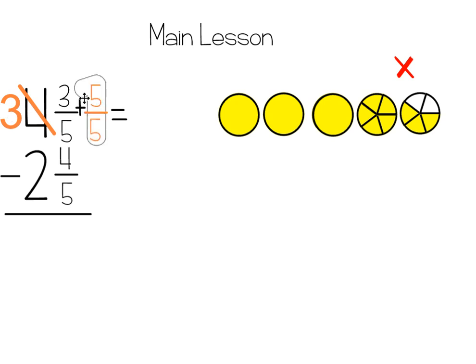I then take that borrowed 1 hole and I rewrite it as a fraction. So the 1 that I borrowed from 4 is now written as 5 fifths. So we have 3 holes, 1 hole, 2 hole, 3 holes. And here's my 4th hole but written as 5 fifths here. Now we are going to take our fraction parts and we're going to add them together. So 3 fifths plus 5 fifths is 8 fifths. And I'm going to move my hole 3 over.